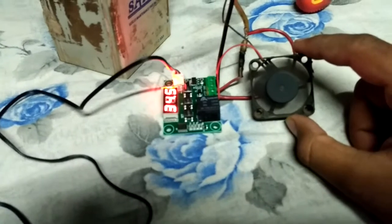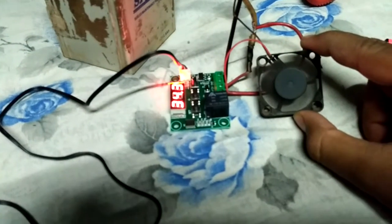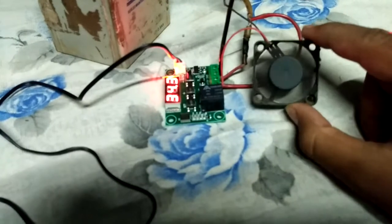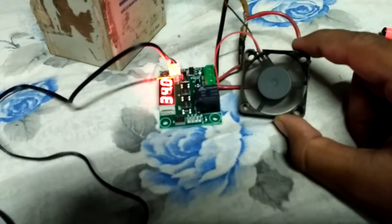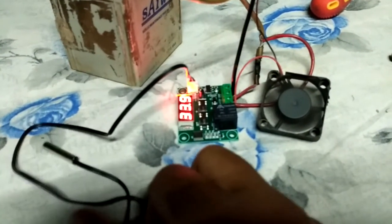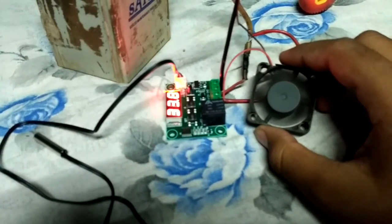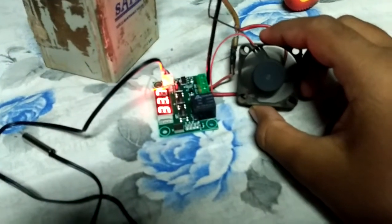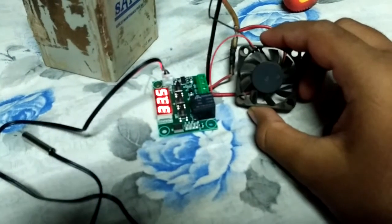So as the temperature reaches 33, the temperature which we have set is 33.5, so as it reaches that, the fan will automatically turn off. So now it's getting there. As it reaches 33.5, we will see it will turn off automatically.